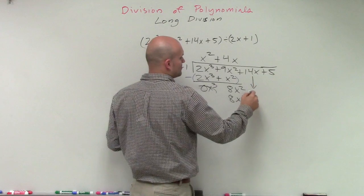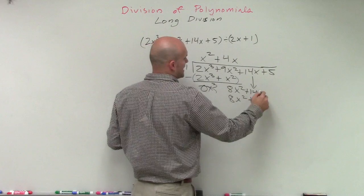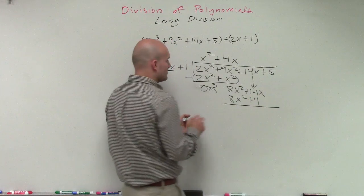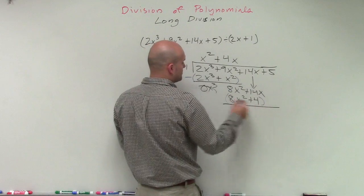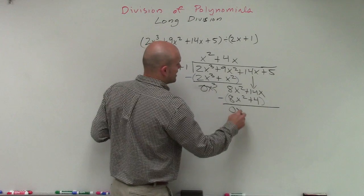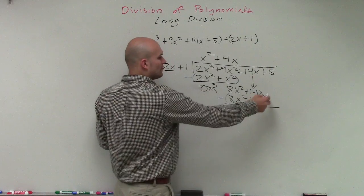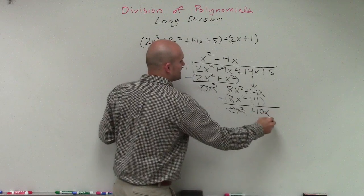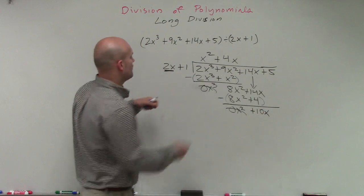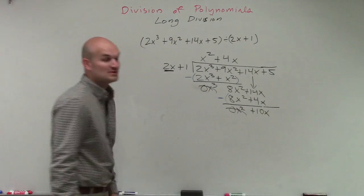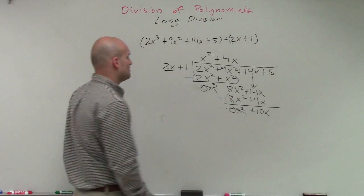Again, I bring down my positive 14x so I can subtract the two rows. Again, when I subtract the two rows, make sure you put them in parentheses and subtract. So 8x squared minus 8x squared is 0x squared, which is just 0. 14x minus 4x is going to be a positive 10x. That's 4x times 1 is definitely a 4x, not a 4. So 14x minus 4x is going to be a positive 10x.